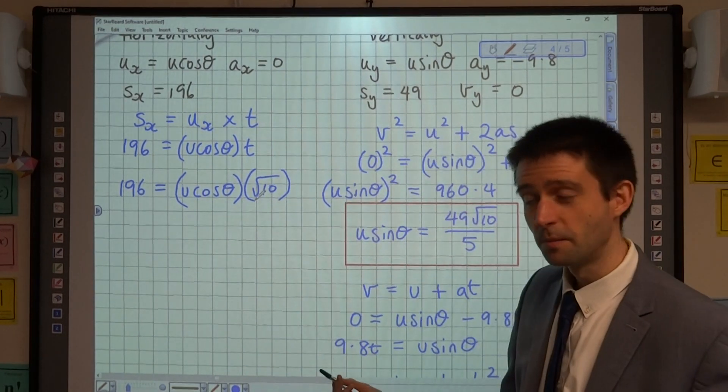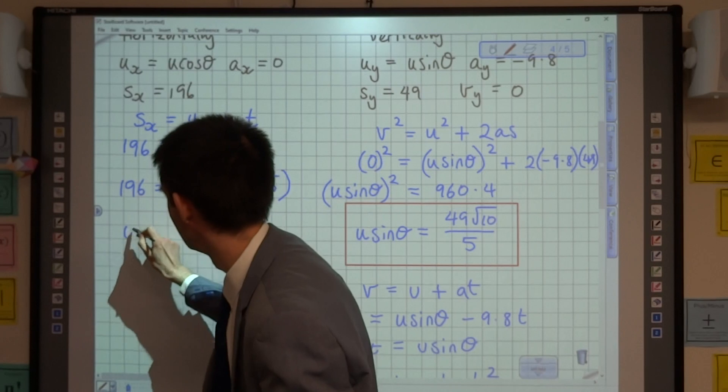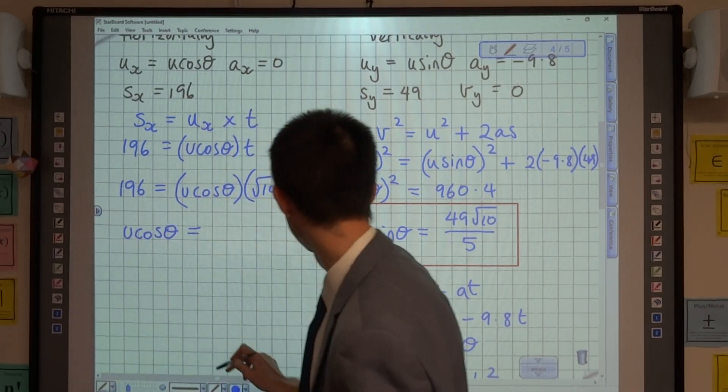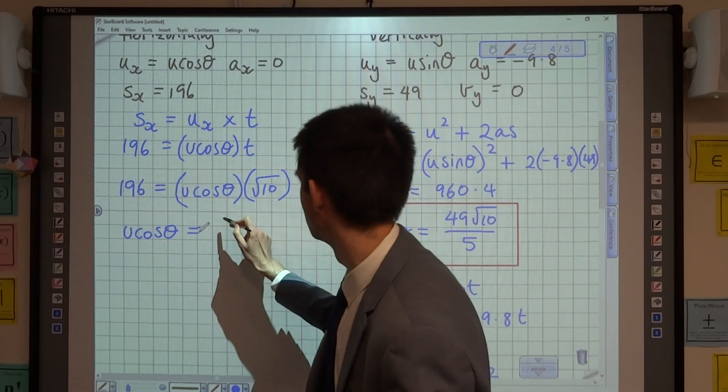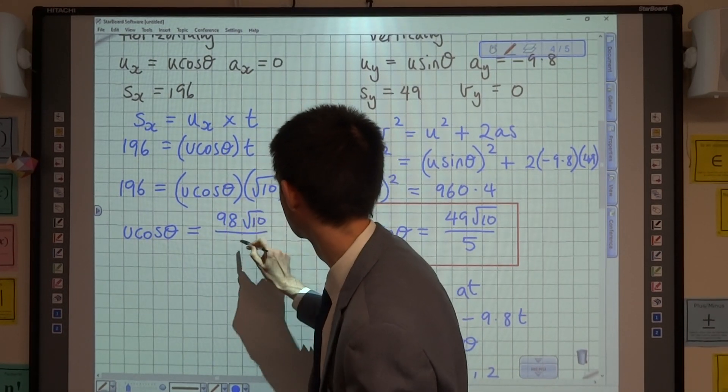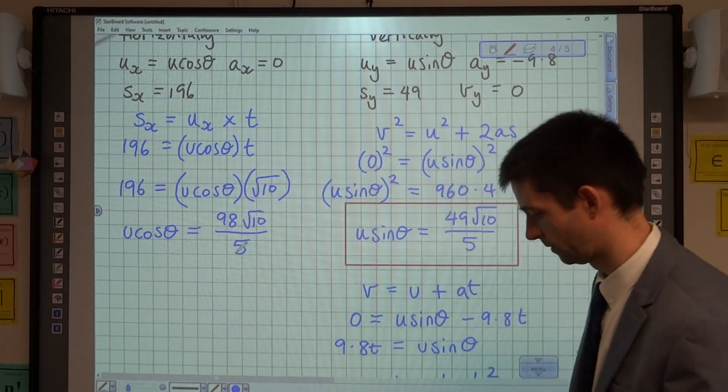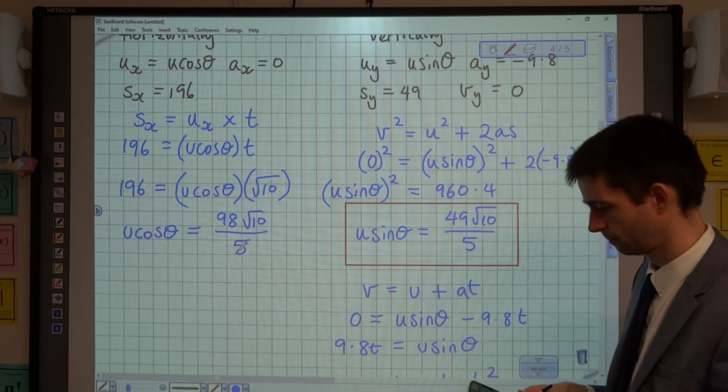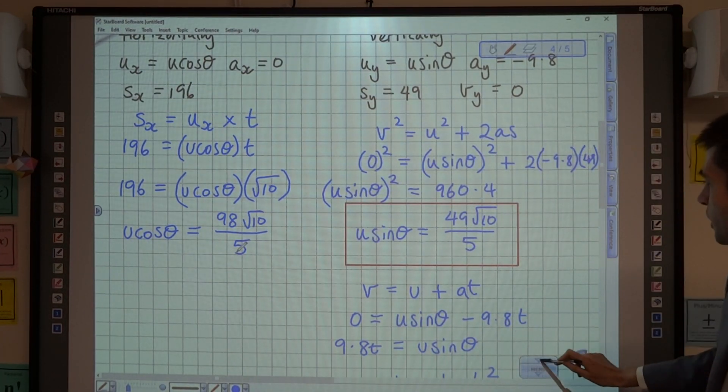And then if I divide by root 10, that is going to give me u cos theta equals the rather beautiful 98 root 10 over 5. Okay, and I'm going to put a red box around that.